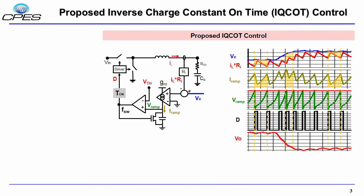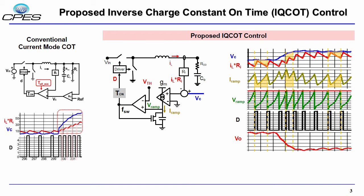We have proposed a new inverse charge constant on-time (IQ COT) control, and you can see the control methodology here. Let's compare that with the conventional current mode control, where Vc and the inductor current create the duty cycle. In the load step-up case, shown on the left-hand side, when Vc crosses the inductor current, the duty cycle loses control.